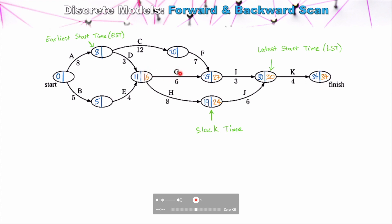That slack time of 10 for Task G is not simply the difference between the two node values, because there's a second task coming out of that node — you must manually calculate it. When two paths come to a node, we take the lowest value as input. For Task F, we can start it as late as 20 without delaying the project. Again, with two paths coming to the next node, we take the smallest: Task D can start as late as 13 with no delay. Task C, however, must be started no later than eight — it's a good example where Task D has slack time even though it may not appear obvious from the node values.